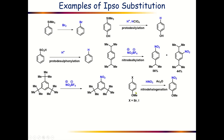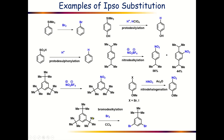Another very interesting example is when this particular compound is treated with nitric acid in the presence of acetic anhydride — nitro-dehalogenation will take place, that is the halogen will be replaced by NO2. The last example is bromo-dealkylation reaction, where an alkyl group is replaced by bromine. As you can see, these two tert-butyl groups will be replaced by two bromine atoms, with CCl4 acting as the solvent. These are the interesting examples of ipso substitution reaction. Thanks for watching this video, see you in the next video.